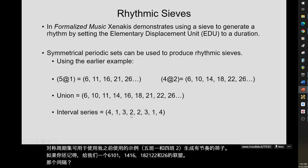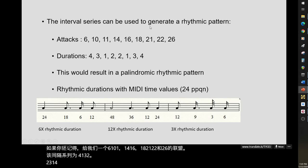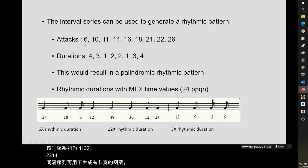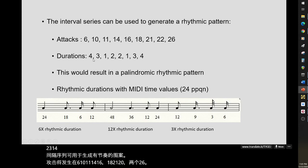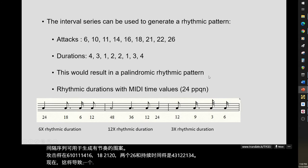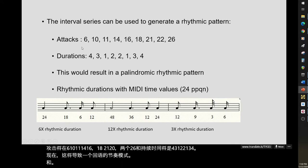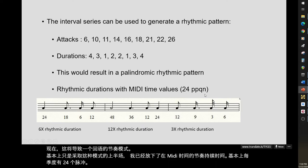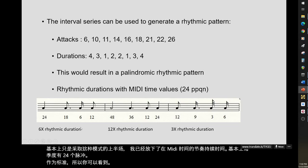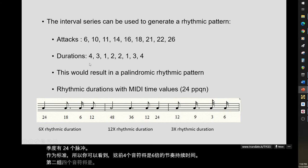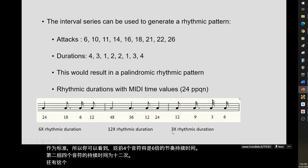The interval series is 4, 1, 3, 2, 2, 3, 1, 4. The attacks would happen at 6, 10, 11, 14, 16, 18, 21, 22, 26, and the durations would be 4, 3, 1, 2, 2, 1, 3, 4. This results in a palindromic rhythmic pattern. Taking the first half, the rhythmic durations in MIDI time use 24 pulses per quarter note as standard: the first four notes would be 6 times the rhythmic duration, the second group of four notes 12 times this duration, and the third group 3 times the rhythmic duration.